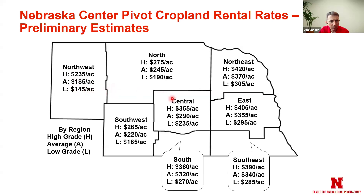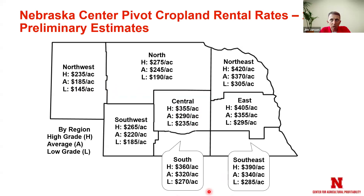All the factors we've mentioned about dry land cropland influencing cash rental rates carry forward to the center pivot irrigated cash rents as well. The breakdown here shows how the cash rents vary by region, and also represents the low third, the upper third, and the overall average. If the tenant provides the power unit or the pivot, you would discount the cash rent to reflect that — meaning you would reduce the cash rent charge because the tenant is providing a component of the system.